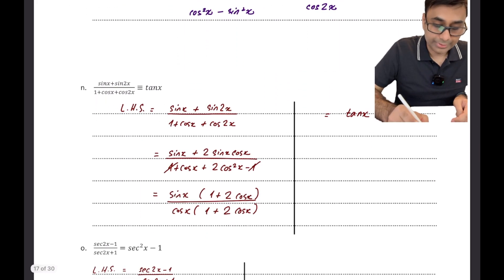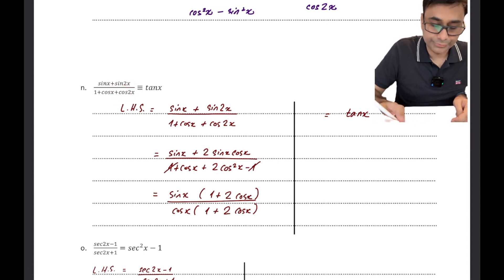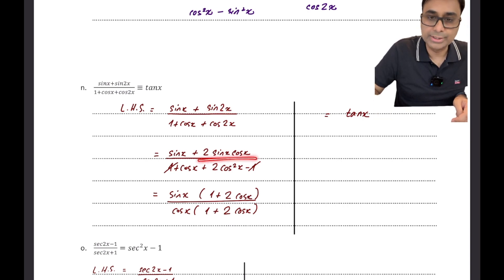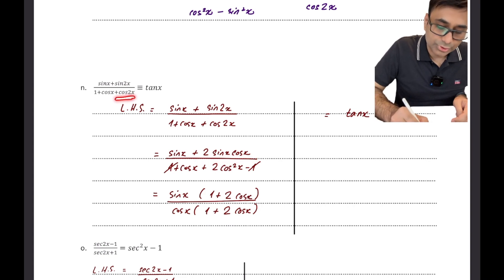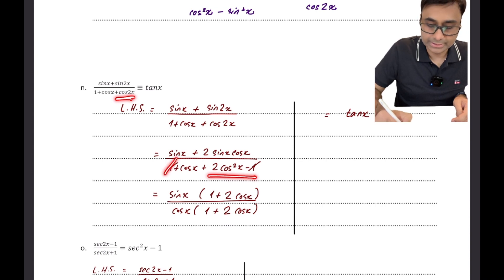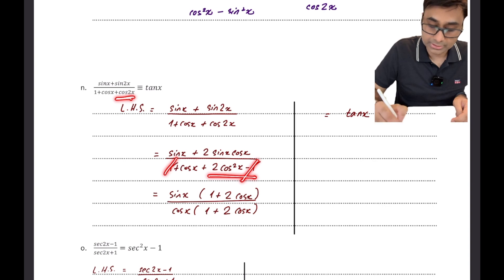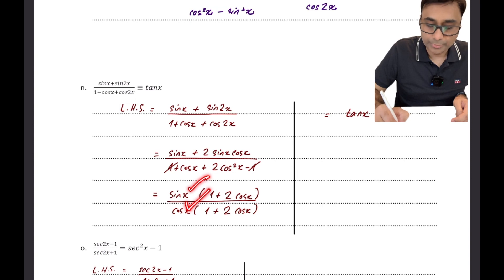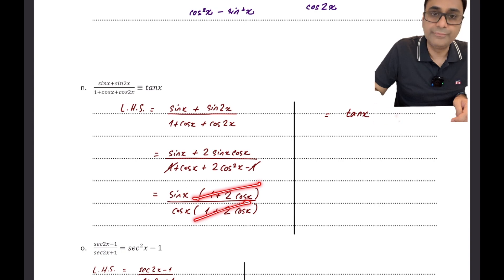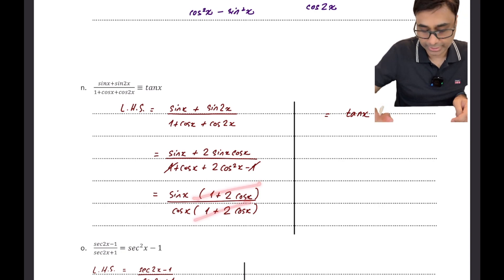Another example with sin 2x and cos 2x — again using double angle formulas. Sin 2x = 2 sin x cos x. For cos 2x I choose 2cos²x - 1 because that 1 cancels, giving more room for simplification. Taking sin x common from the numerator and cos x from the denominator, the common factors cancel, leaving sin x/cos x = tan x.